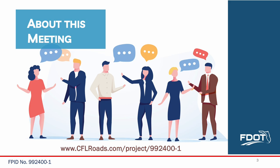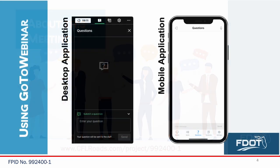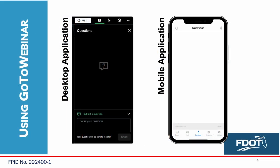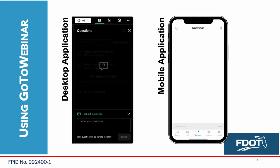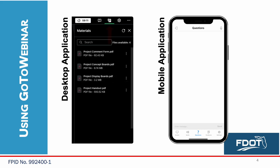The presentation is also available on the project webpage at www.cflroads.com/project/992400-1. For online participants in the GoToWebinar application, you will see a set of icons in the top right corner of the menu bar. Click the questions icon where the red arrow is pointing to open the questions panel. Type your question into the field and hit Send to submit your question or comment to project staff. To download documents about the project, click on the materials icon where the red arrow is pointing to open the documents panel, where project files can be viewed or downloaded.